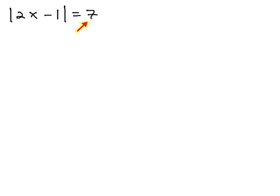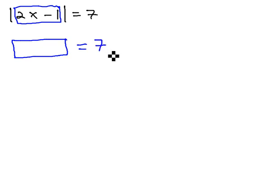This stuff inside the absolute value... I'll just make it a box for now. That stuff inside the absolute value could equal 7, or the stuff inside the absolute value could equal negative 7.